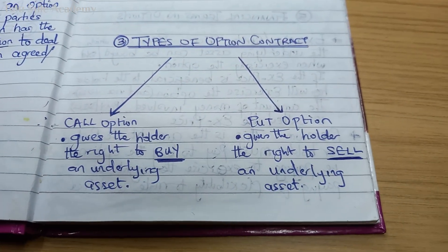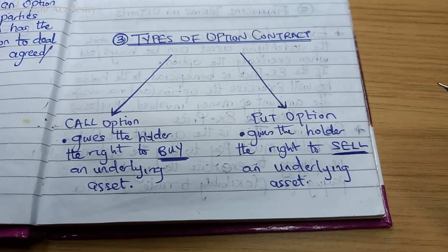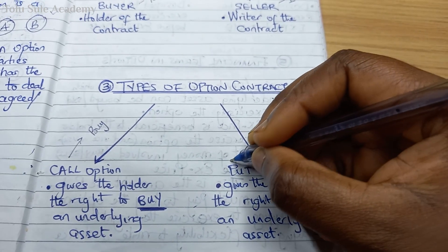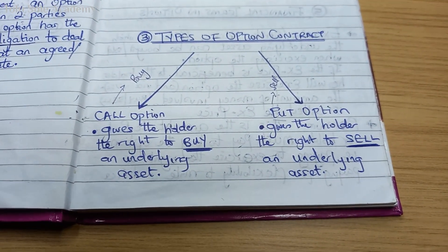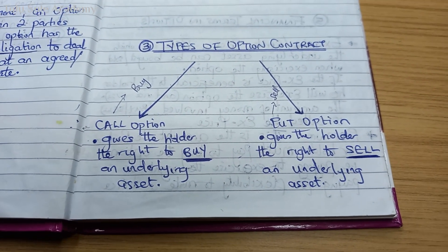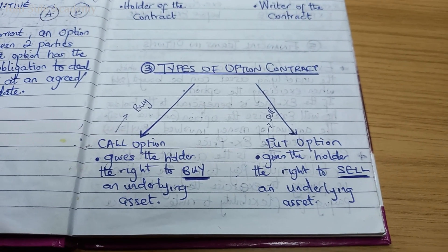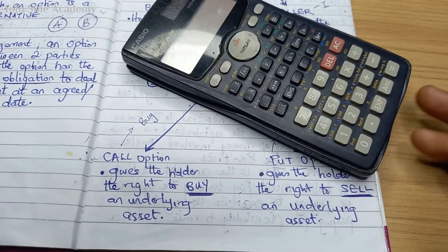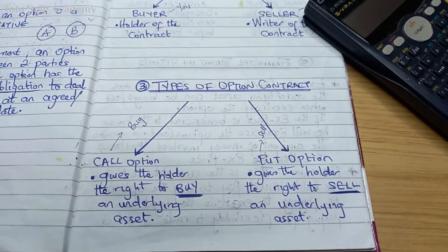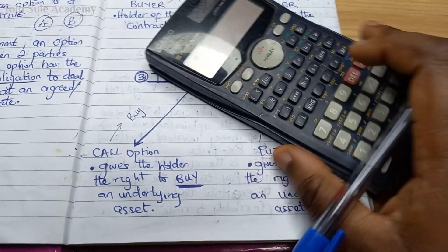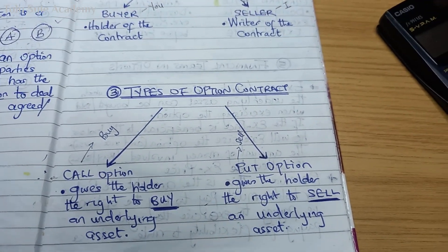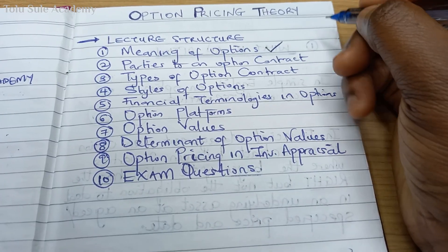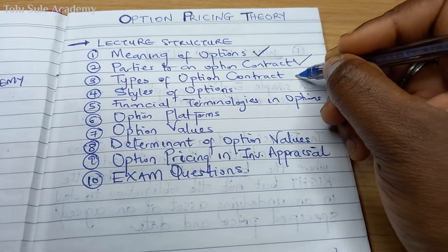Types of option contract: we have the call option and the put option. The call option gives the holder the right to buy an underlying asset — anytime you see 'call,' it relates to buying. Anytime you see 'put,' it relates to selling. In SFM, we focus mostly on the holder. If you hold a call contract, you have the right to buy. If you hold a put option, you have the right to sell.